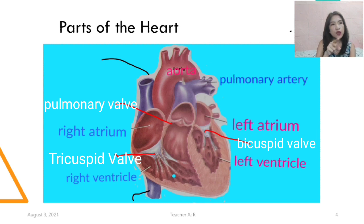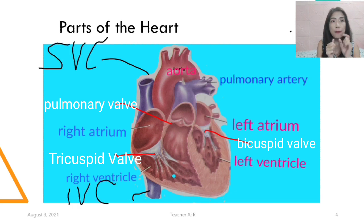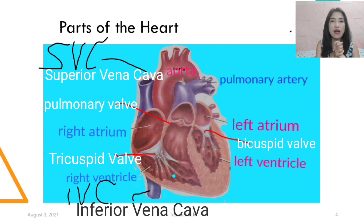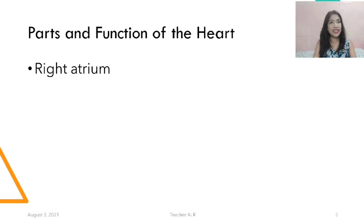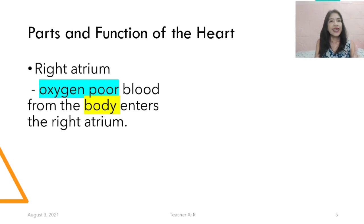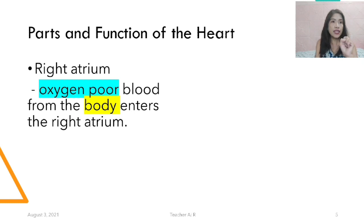What are these two tubes going up? The one with the black lines — the upper tube is the SVC, or the superior vena cava, and the lower part is the inferior vena cava. The right atrium receives oxygen-poor blood coming from the different parts of the body via the superior and the inferior vena cava.